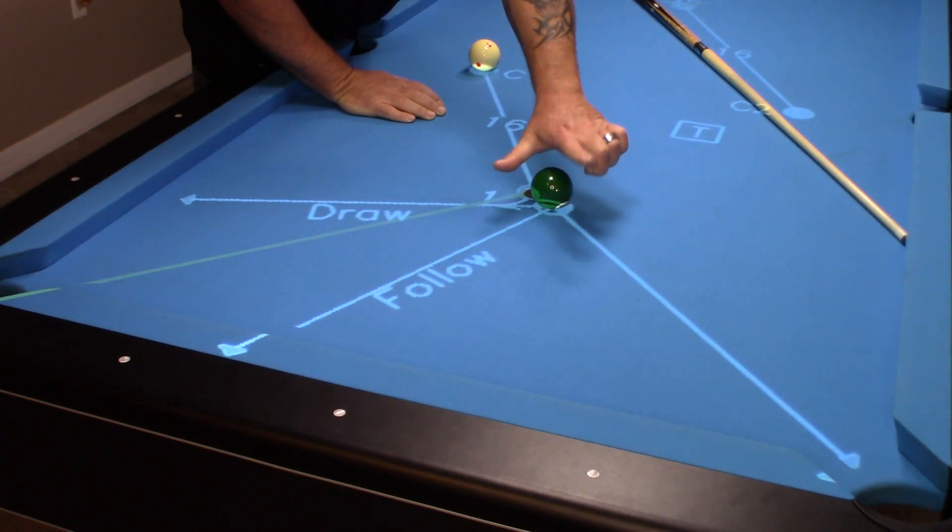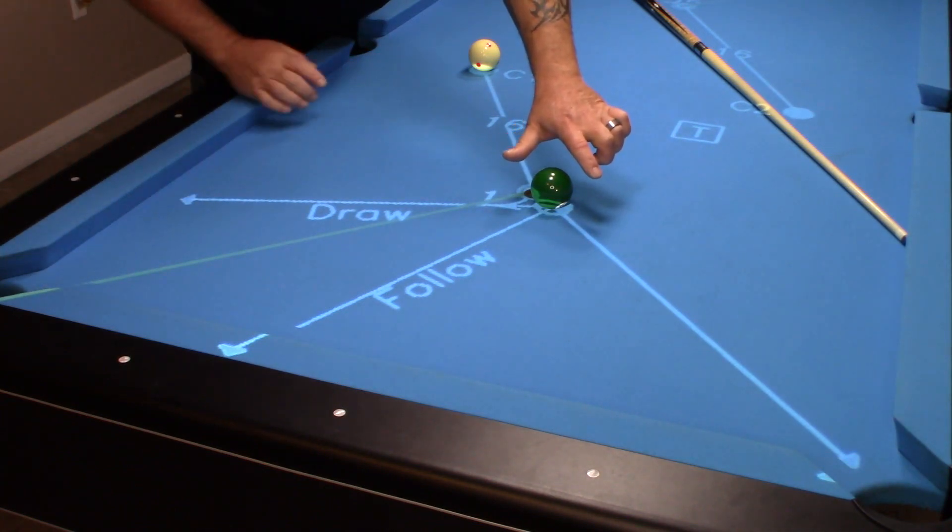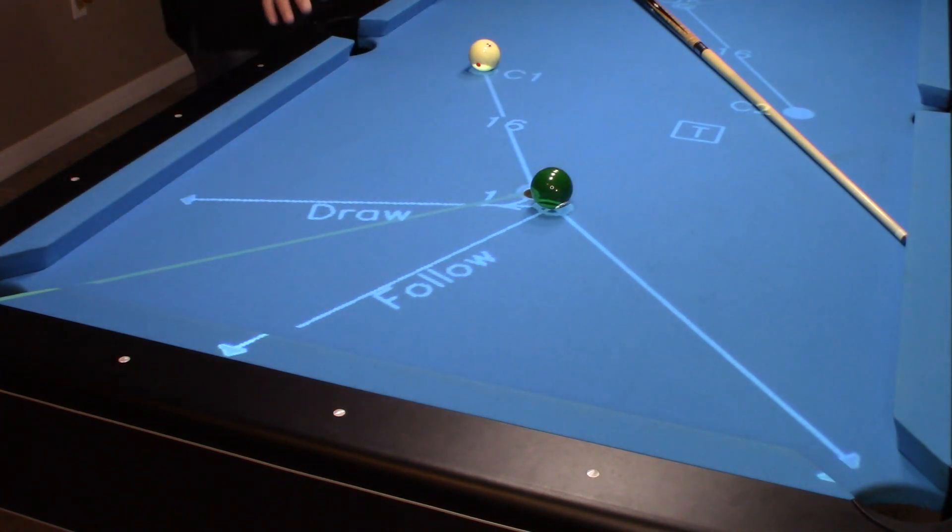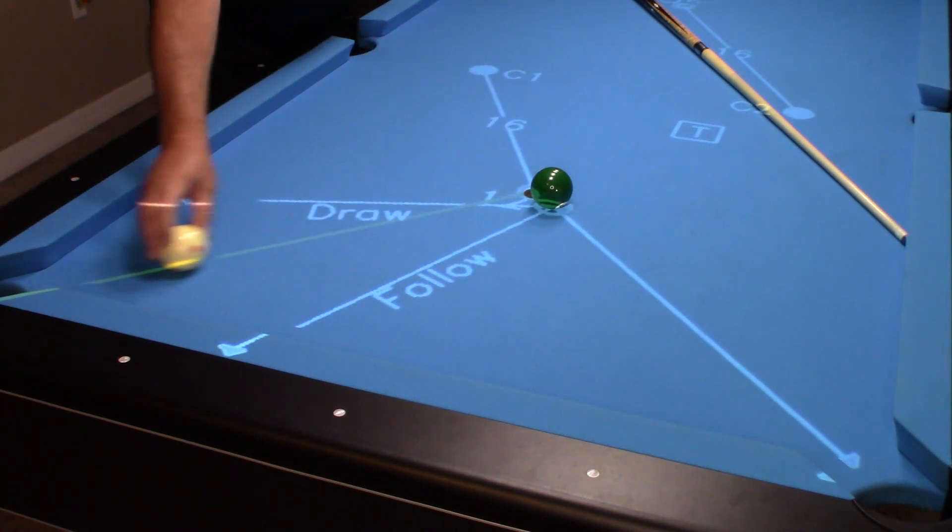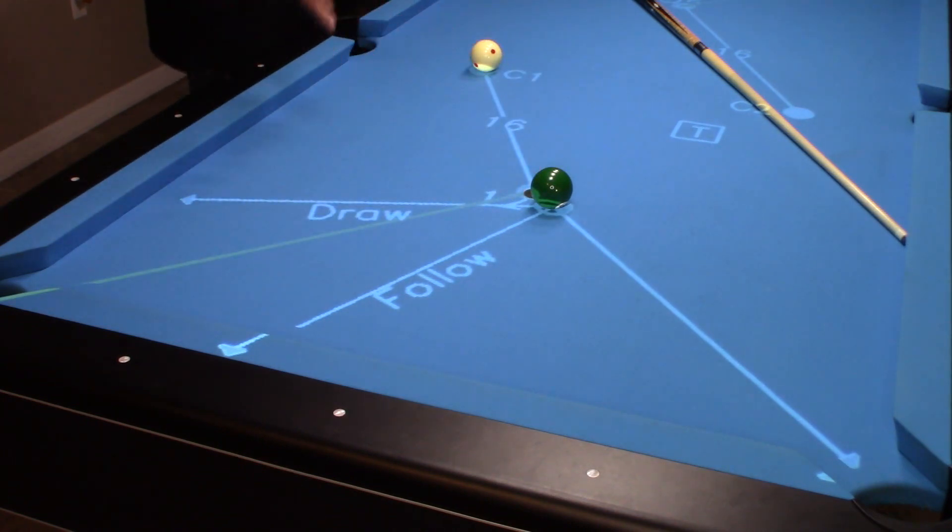And you can see my finger's pointed towards that corner pocket and my thumb's pointed towards this corner pocket. So that gives me the general idea of, okay, well, that's the direction after contact that the cue ball is going to travel if I hit center.